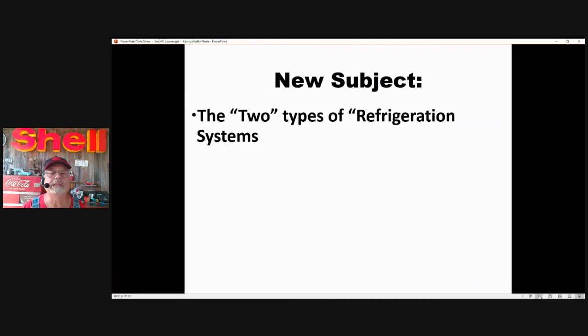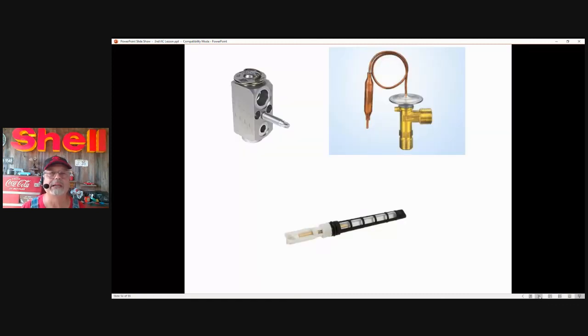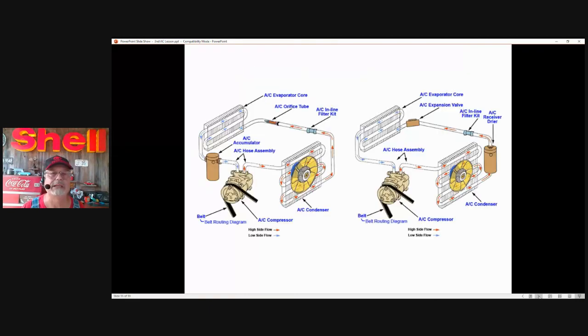New subject. Let me identify the two types of refrigeration systems used on most vehicles. I'm going to call it the tube type and the valve type. On the top, I have two examples of the average-looking expansion valves. We have the original style, a 90-degree type, and then we have the block type. These are both expansion valves. On the bottom is the expansion tube.